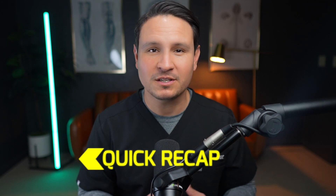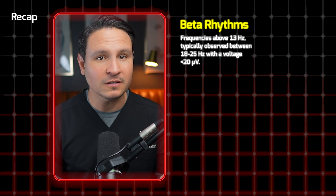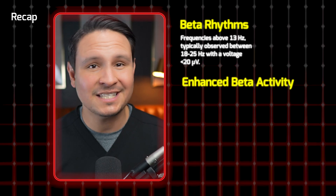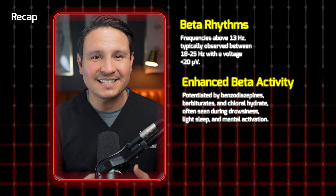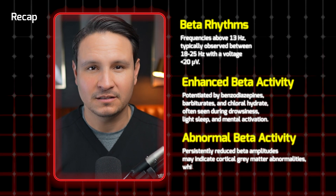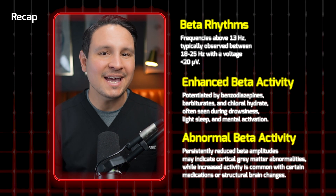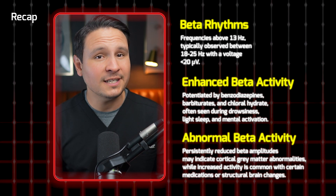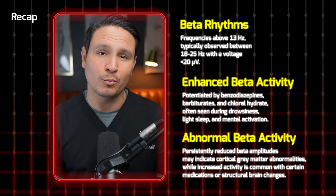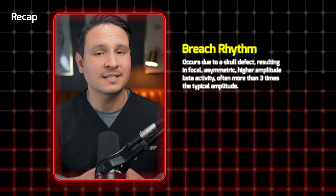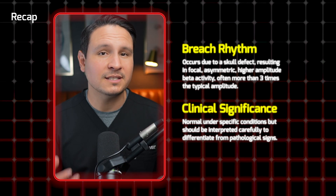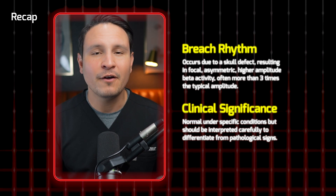Here's a quick recap of what we just covered. Beta rhythms: frequencies above 13 Hz, typically observed between 18 to 25 Hz with a voltage of less than 20 microvolts. Enhanced beta activity is accentuated by benzodiazepines, barbiturates, and chloral hydrate, and often seen during drowsiness, light sleep, and mental activation. Abnormal beta activity: persistently reduced beta amplitudes may indicate cortical gray matter abnormalities, while increased activity is common with certain medications or structural brain changes. Breech rhythm occurs due to a skull defect, resulting in focal, asymmetric, higher amplitude beta activity, often more than three times the typical amplitude. Clinical significance: normal under specific conditions, but should be interpreted carefully to differentiate from pathological signs.